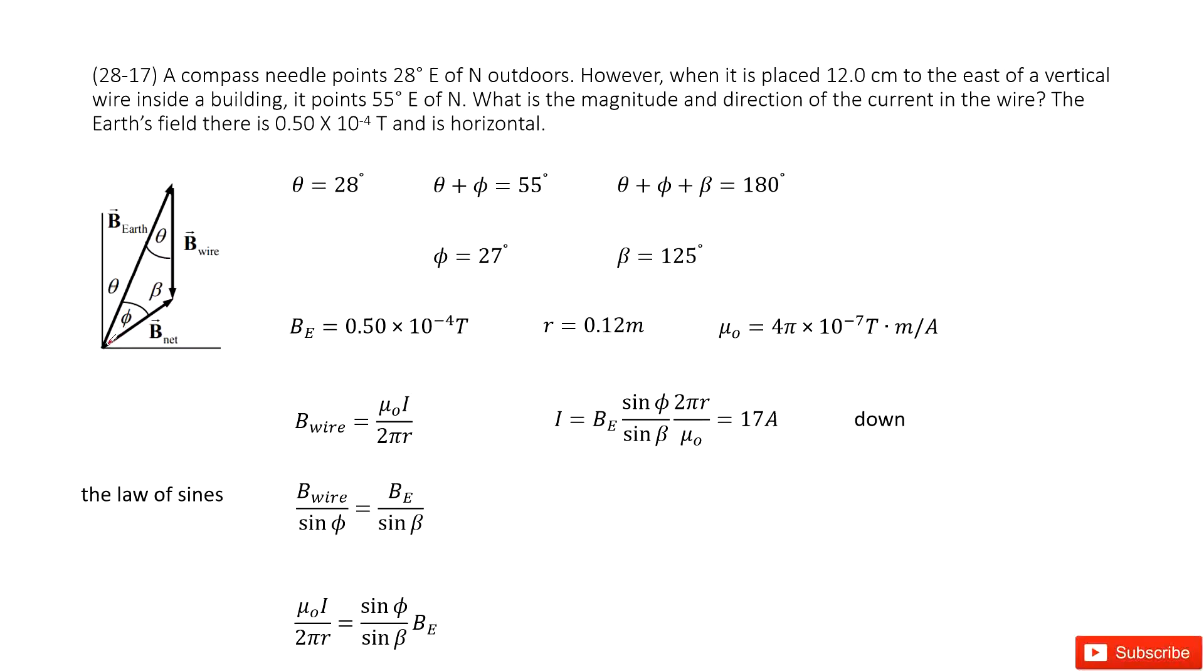Now the net magnetic field makes an angle of 55° east of north. That means theta plus phi is 55°, so you can solve for phi equal to 27°.